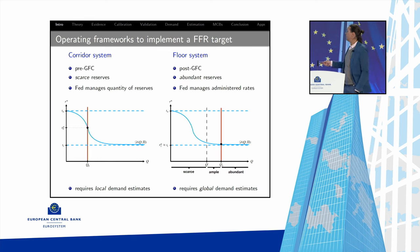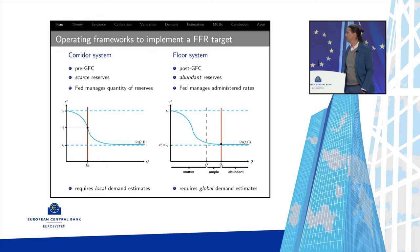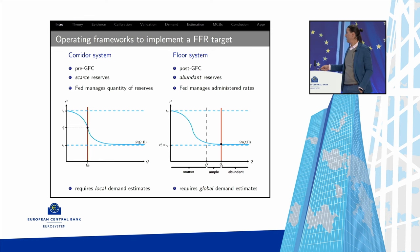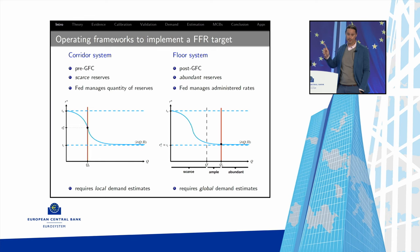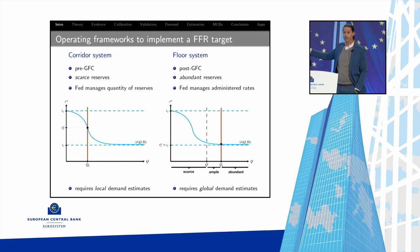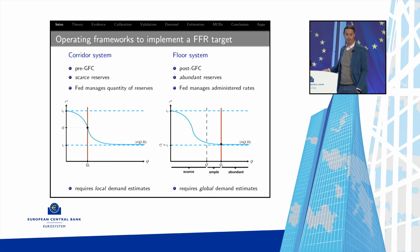Comparing the two frameworks: the corridor system is demanding because you have to manage market liquidity on a daily basis, requiring a lot of information about the slope of demand. The floor system is sometimes described as preferable because you don't actively manage demands — the informational requirements on knowing the demand slope look less onerous. But in the floor system, you need global information: you need to know whether you're on the flat part or not. Our job in this paper is to tell you what the global shape of the demand looks like — not just a local slope.